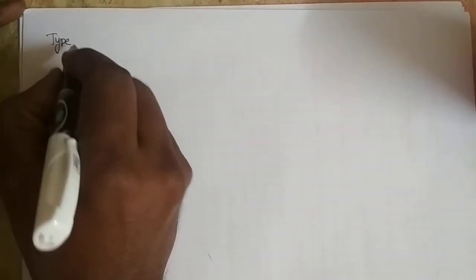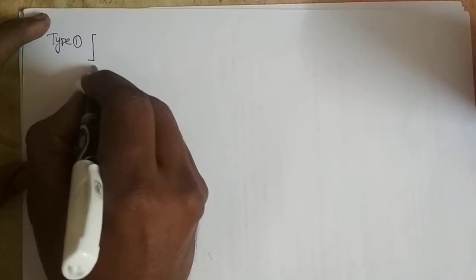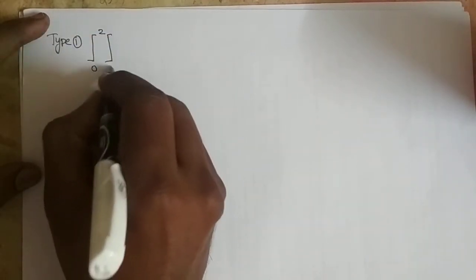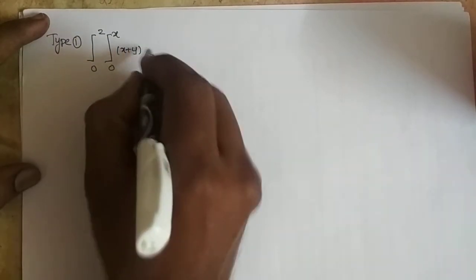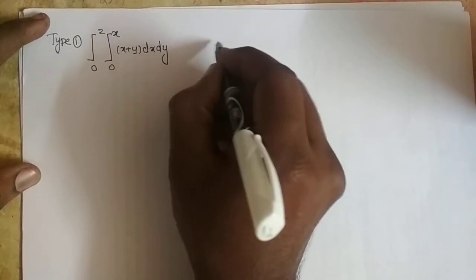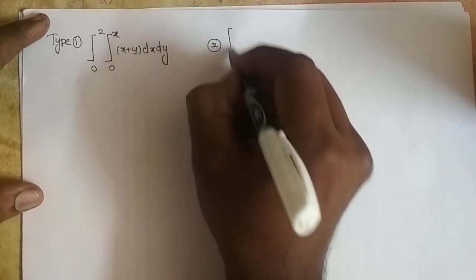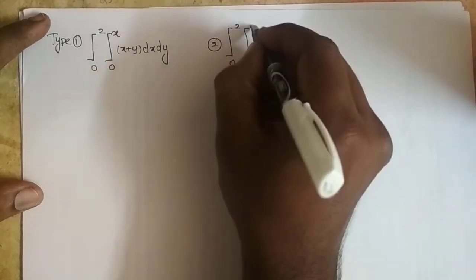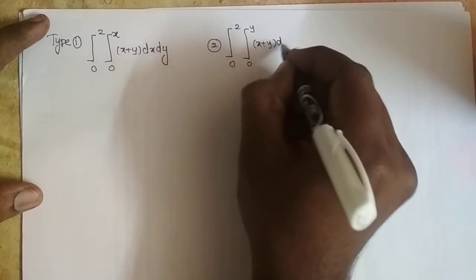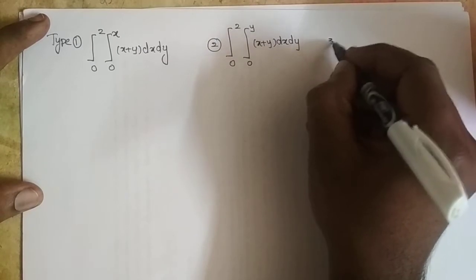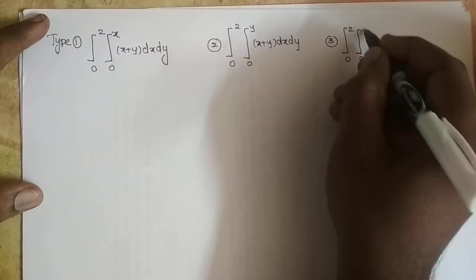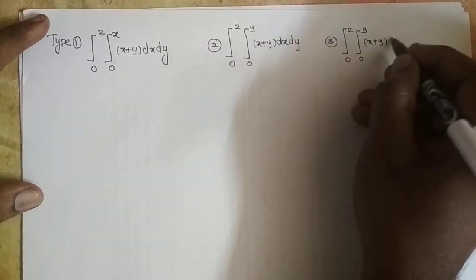Here we consider double integrals in three types with an example. Type 1: integral 0 to 2, integral 0 to x, (x + y) dy dx. Type 2: integral 0 to 2, integral 0 to y, (x + y) dx dy. And Type 3: integral 0 to 2, integral 0 to 3, (x + y) dx dy.